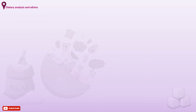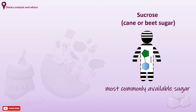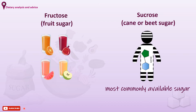Sucrose is considered a major culprit. It is the most commonly available sugar and is able to facilitate production of extracellular polysaccharides in plaque. However, other sugars can also cause dental caries, as frequent consumption of fruit-based drinks is known to be a key factor in the development of early childhood caries.